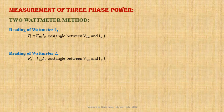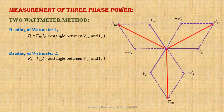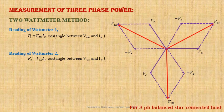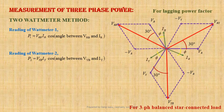Let us draw the phasor diagram for a 3-phase balanced, star-connected load. Here, line voltage VL leads phase voltage by an angle of 30 degrees. For a lagging power factor load, the angle between VRB and IR is 30 degrees minus φ. Therefore, P1 equals VLIL cos(30° − φ).